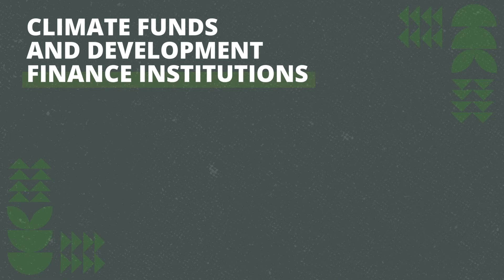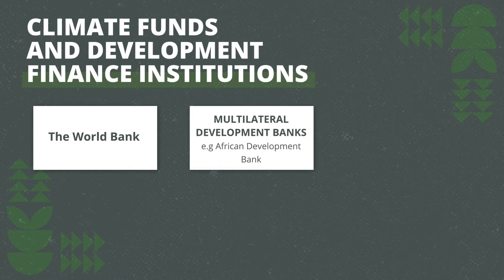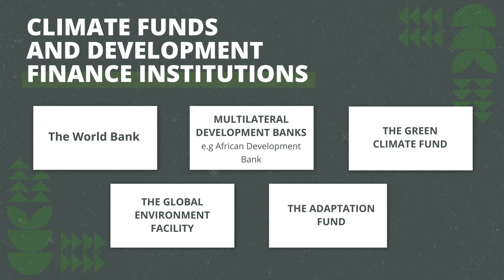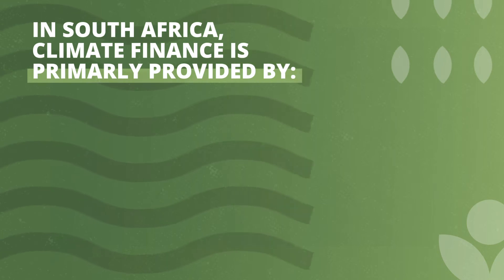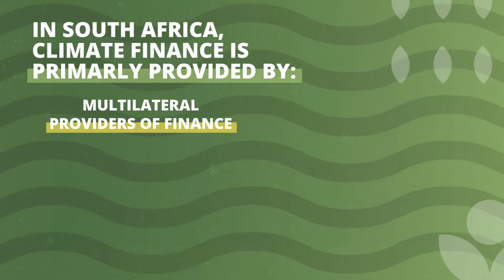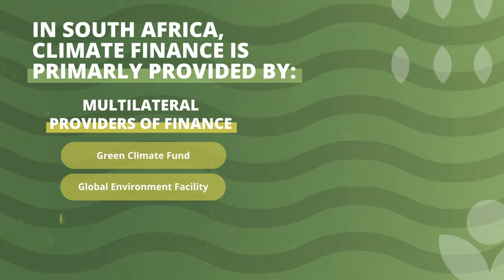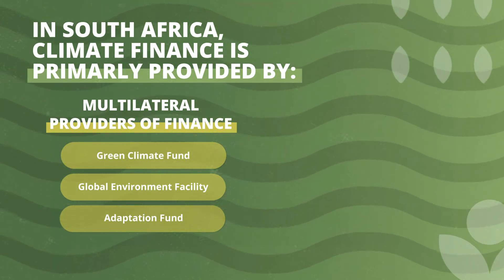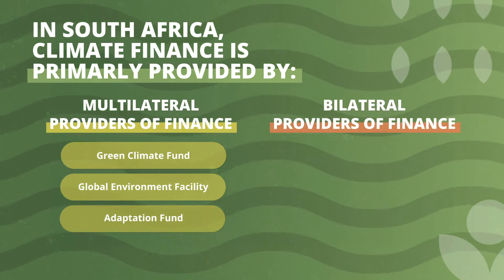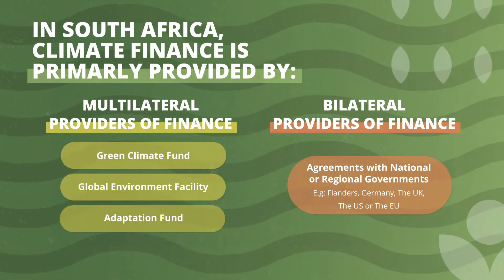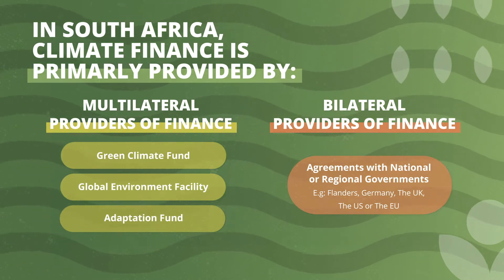Examples of climate funds and DFIs active in South Africa are the World Bank, Multilateral Development Banks, the Green Climate Fund, the Global Environment Facility, and the Adaptation Fund. Large DFIs such as the Green Fund usually support many different countries and are therefore referred to as multilateral providers. However, there are also international climate financing agreements which take place between two countries, referred to as bilateral agreements. For example, South Africa has bilateral climate financing agreements with the Flanders government, Germany, and a host of other countries.